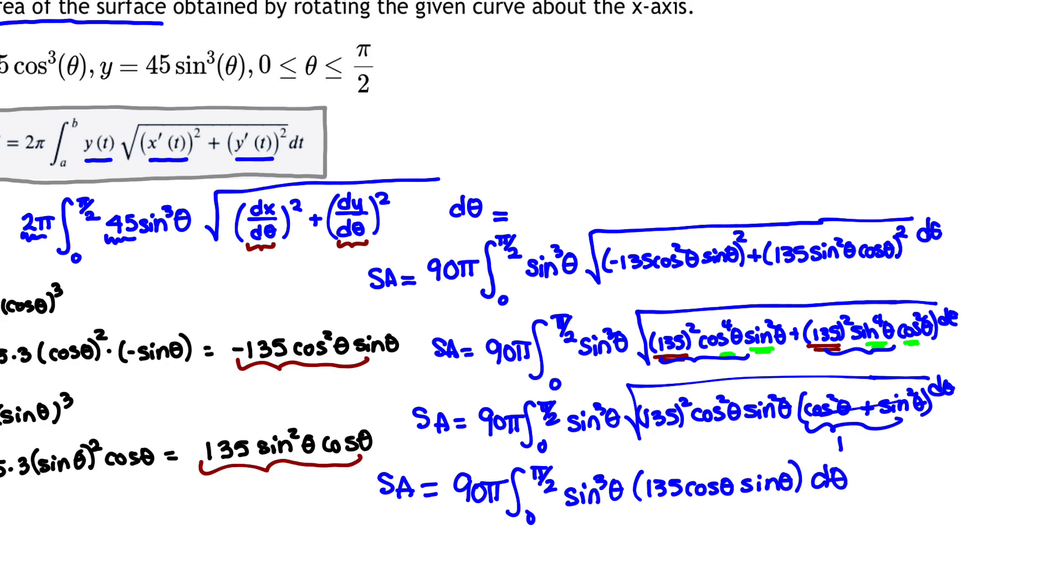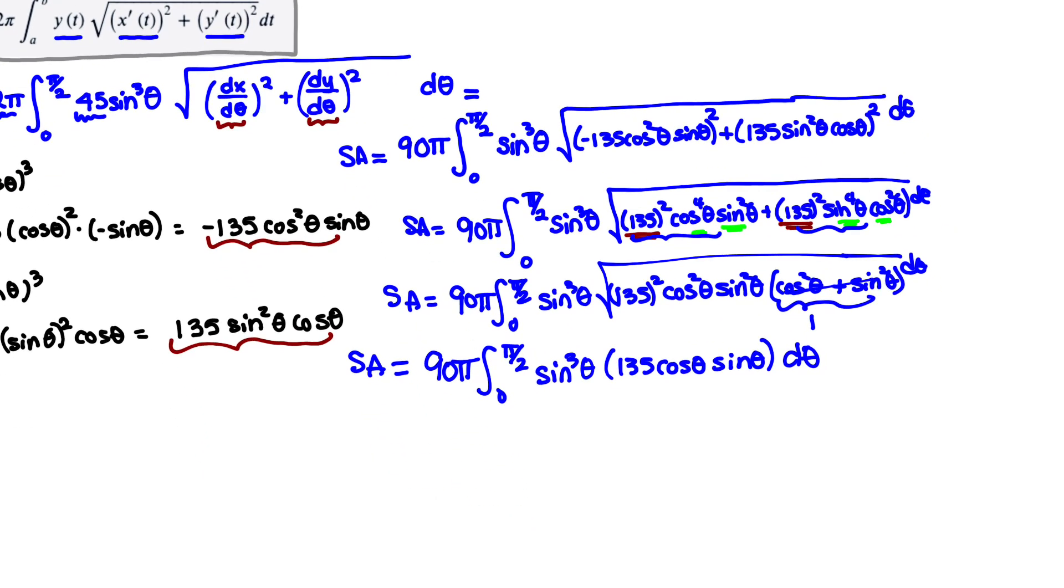So close to completion. I'm going to combine. The surface area is 90π times the integral from 0 to π/2. Putting the sines together, I have four of them. So surface area is going to be 90π times 135. We'll deal with that in a minute. sin⁴θ times cos θ dθ.